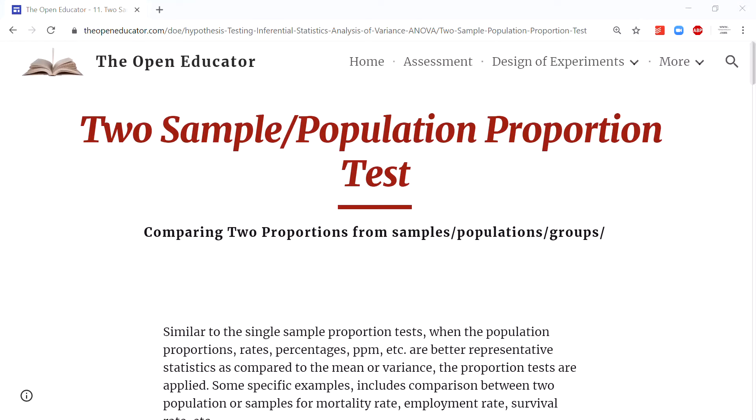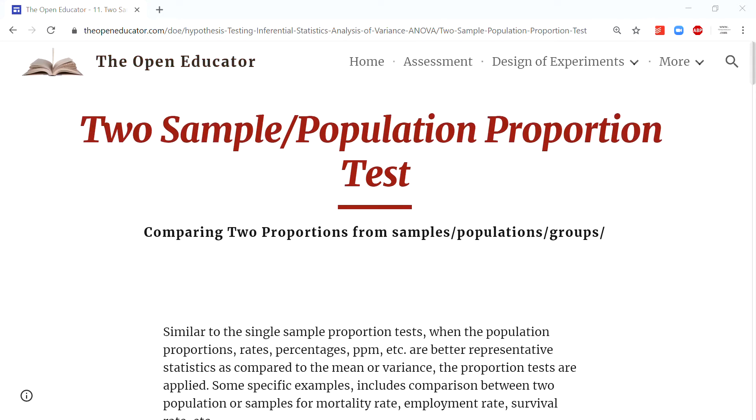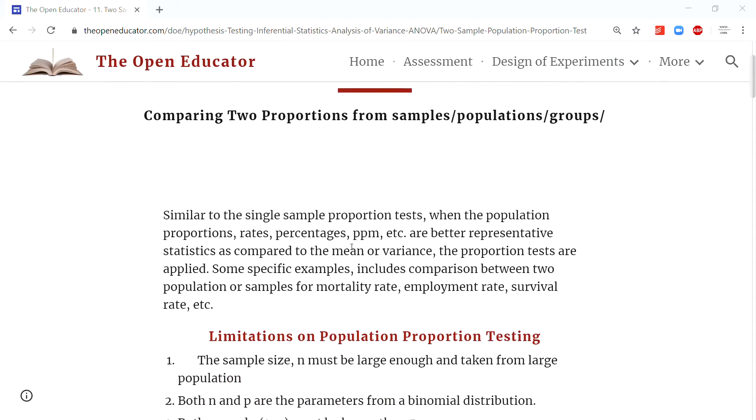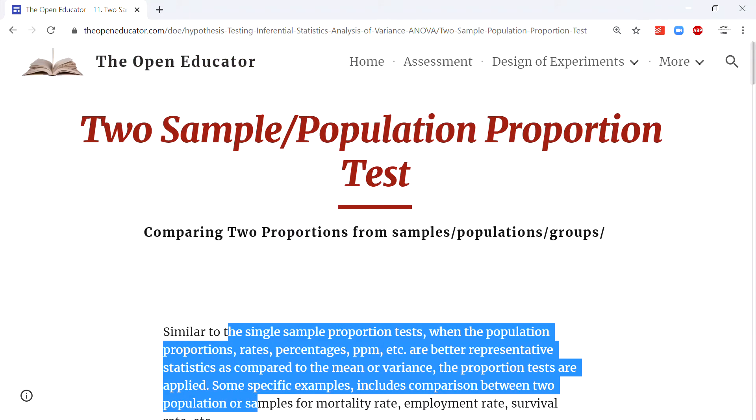This tutorial covers the two-sample or two-population proportion test: what is the most appropriate situation when you can apply this and how to analyze the data using both Excel and Minitab. Similar to the single sample proportion test, when the mean or standard deviation is not an appropriate measure for the population parameter, these tests are used.